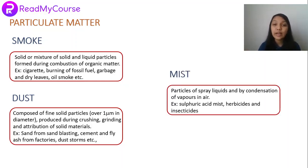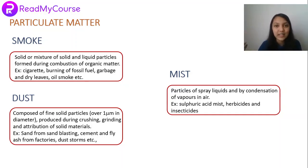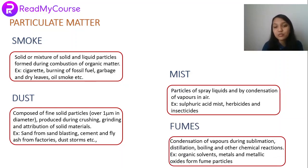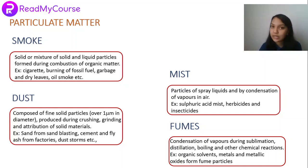Mist is produced by particles of sprayed liquids and by condensation of vapors in air — for example, sulfuric acid mist, herbicides, insecticides, and pesticides sprayed for plant protection. Fumes are formed by condensation of vapor during sublimation, distillation, boiling, or other chemical reactions — for example, organic solvents and metal and metallic oxide particles form fume particles.